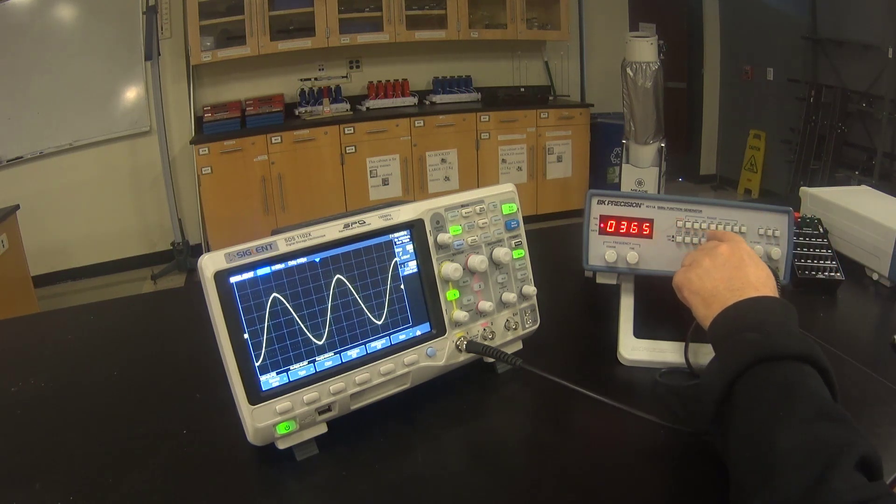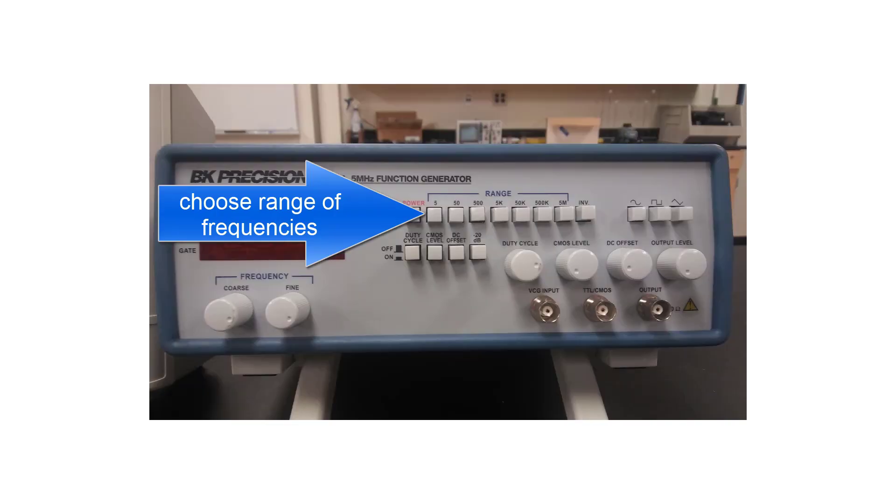These buttons are used to control the output frequency. You select the button to choose the range of frequencies. We are going to start with the 500 Hz range. So that way we are selecting frequencies between 50 and 500 Hz.